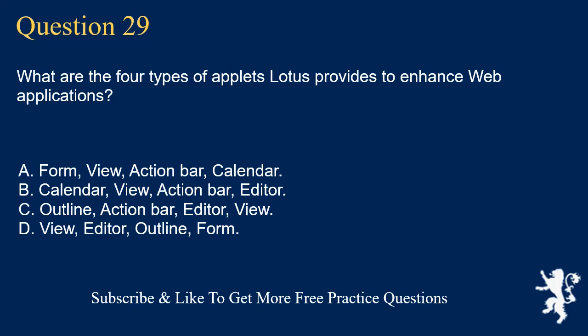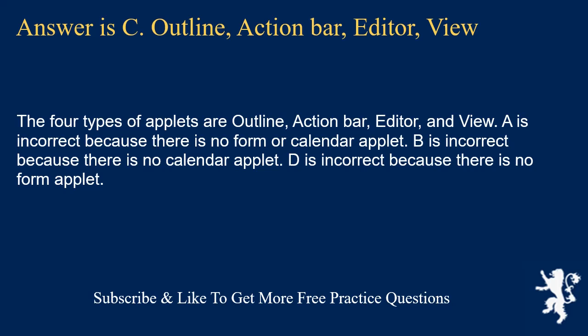Question 29. What are the four types of applets Lotus provides to enhance web applications? Form, view, action bar, calendar. Calendar, view, action bar, editor. Outline, action bar, editor, view. View, editor, outline, form. Answer is C: Outline, action bar, editor, view. The four types of applets are outline, action bar, editor, and view. A is incorrect because there is no form or calendar applet. B is incorrect because there is no calendar applet. D is incorrect because there is no form applet. Question 30. With what types of fields can the editor applet be used? Text and rich text. Rich text only. Text only. The editor applet can be used only for in-view editing. Answer is B: Rich text only. The editor applet works with rich text fields only. A and C are incorrect because the editor applet can be used only with rich text fields. D is incorrect because the editor applet is used to edit rich text fields on the web.